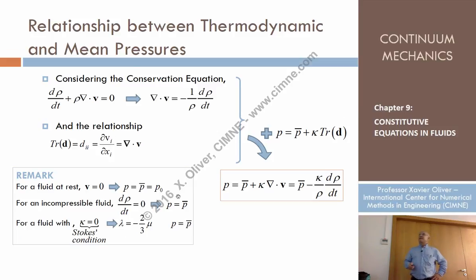In what other cases are these two pressures equal? Well, imagine that this term k is zero. Then, even if the fluid is moving and it's not incompressible, this term cancels just because this coefficient is zero. That is what is called the Stokes condition. Sometimes, to simplify problems, we make the assumption that the bulk viscosity is zero. In that case, from this assumption, again, the thermodynamic pressure and the mean pressure are the same.